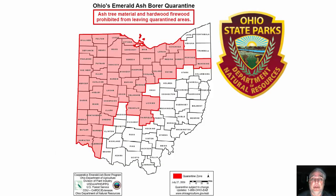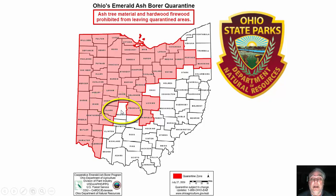The quarantine means that by law you are not allowed — and can get in serious trouble — to take firewood between counties. For example, you cannot pick up firewood in Champaign County and bring it into Madison County, which is not yet quarantined. If you bring firewood from a quarantined area to an unquarantined one, you could carry the emerald ash borer to new areas — and that is probably the number one way these insects spread, causing massive destruction across North America.